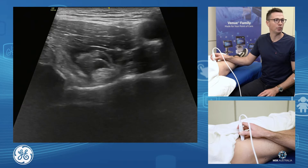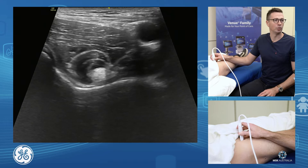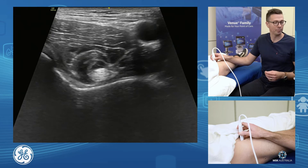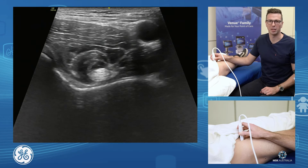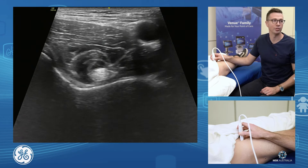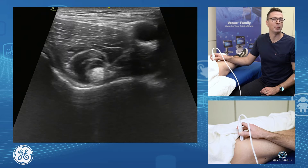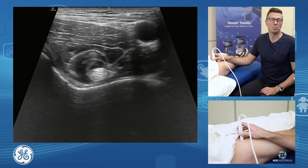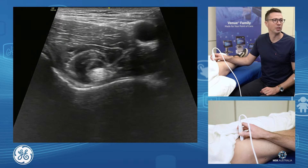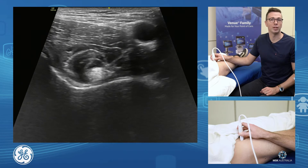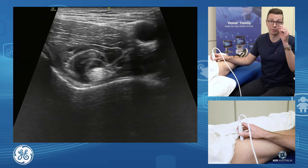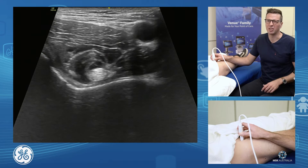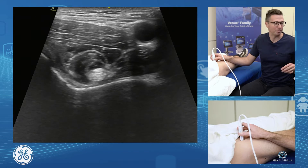This is where we look for iliopsoas bursitis, which is often secondary to hip joint pathology itself. Remember that the iliopsoas bursa, in most cases, is contiguous with the hip joint itself. So if you're doing an iliopsoas bursal injection, you're really doing a hip joint injection.